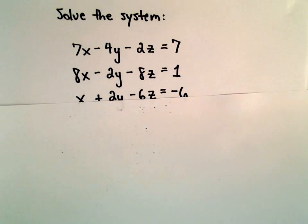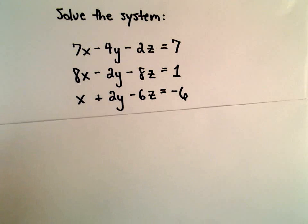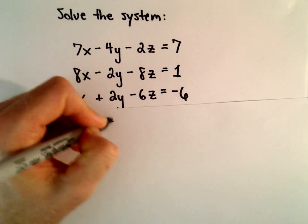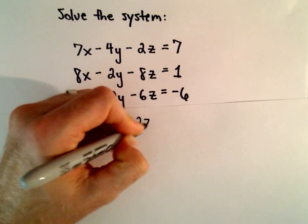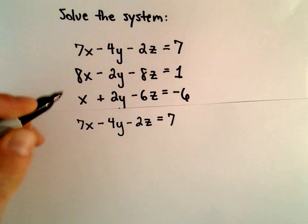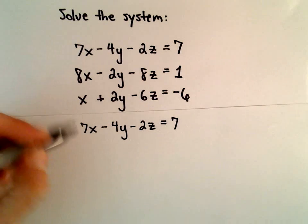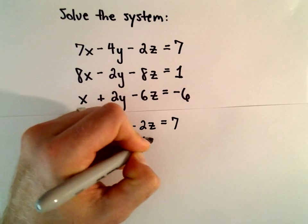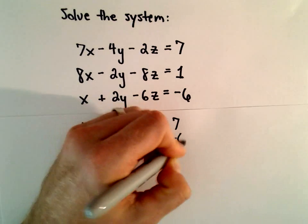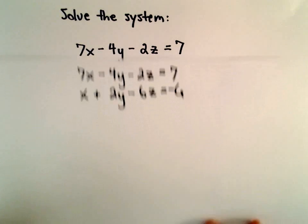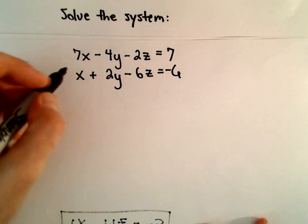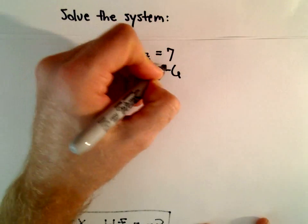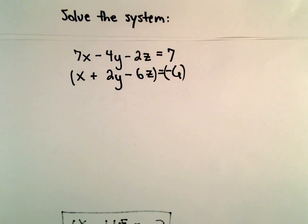I think what I'll do next is I'm going to take my first equation, 7x minus 4y minus 2z equals 7, and I'm going to take my third equation, and again, I'm going to try to get the terms involving y to cancel out. Well, if I add them immediately, they wouldn't cancel, but if I multiply both sides of my second equation by a positive 2, then they will.